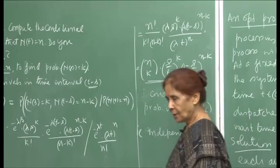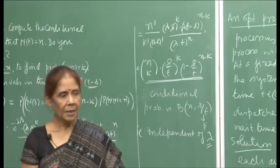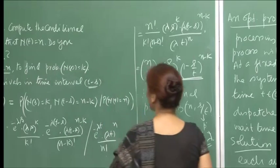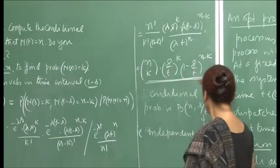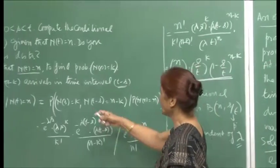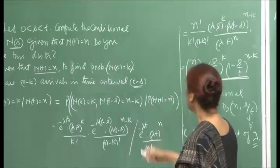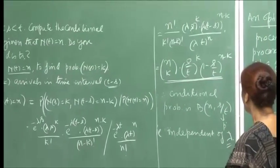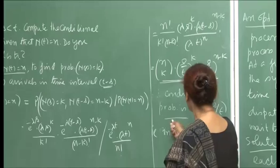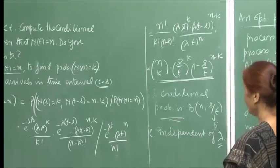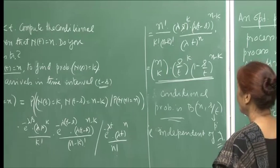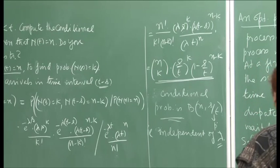Remarkably, this conditional distribution is independent of lambda — no matter what the parameter of the Poisson process is, the conditional probability depends only on the lengths of the time intervals s and t. This is a notable and useful property.